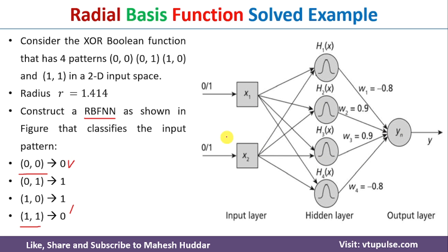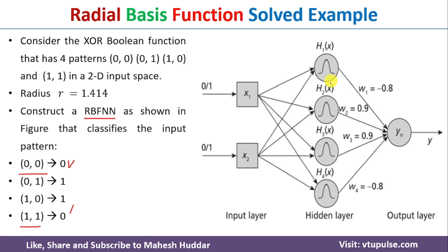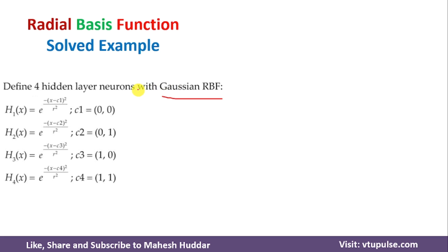Once you define the hidden layer neurons, we need to assign a radial basis function for each of those hidden layer neurons. I will be considering the Gaussian radial basis function here. For each hidden layer neuron, h1(x) is equal to e raised to minus (x minus c1) squared divided by r squared, where x is the input, c1 is the center, and r is the radius.